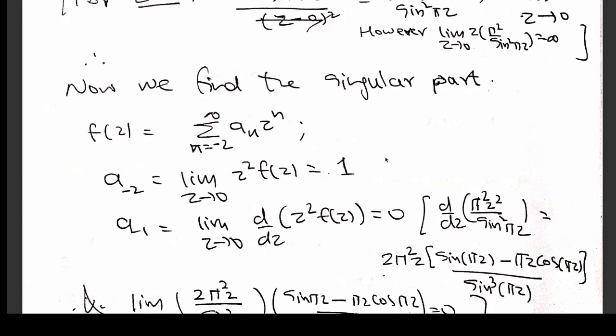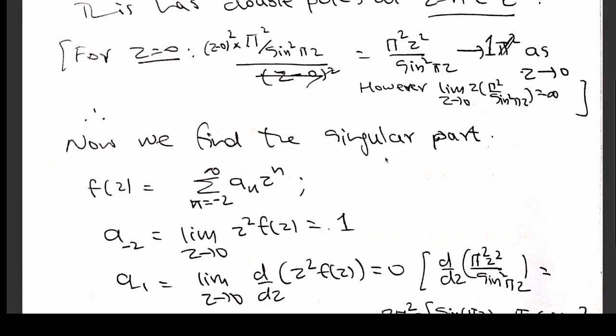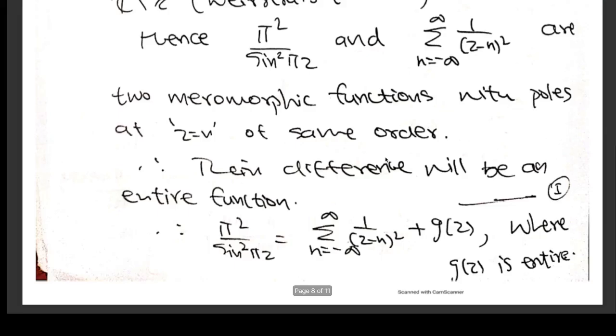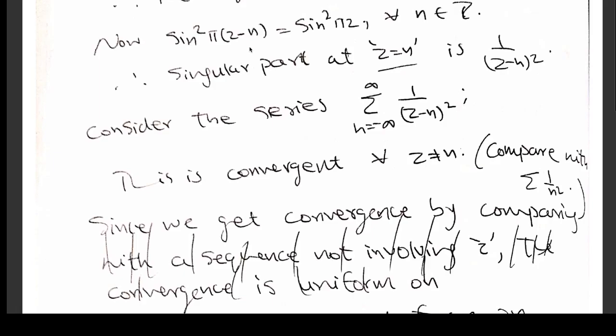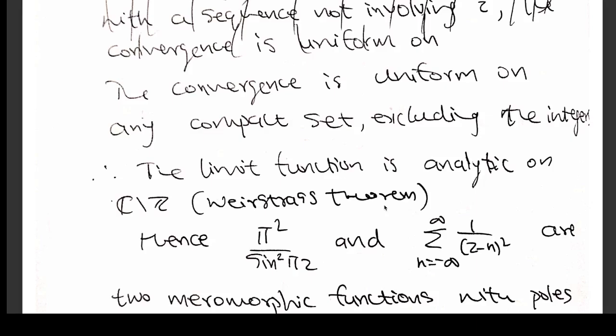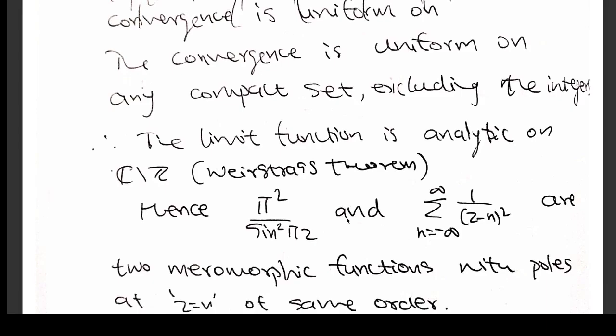So the singular part will be 1/z². Using periodicity — since sin²(π(z − n)) = sin²(πz) — the singular part at z = n will be 1/(z − n)². Now consider the infinite series with terms 1/(z − n)². This is convergent for all z not equal to n, obtained by comparing with Σ1/n². The convergence is uniform on all compact subsets excluding the integers. So the limit function is analytic on ℂ minus ℤ, again by Weierstrass's theorem.